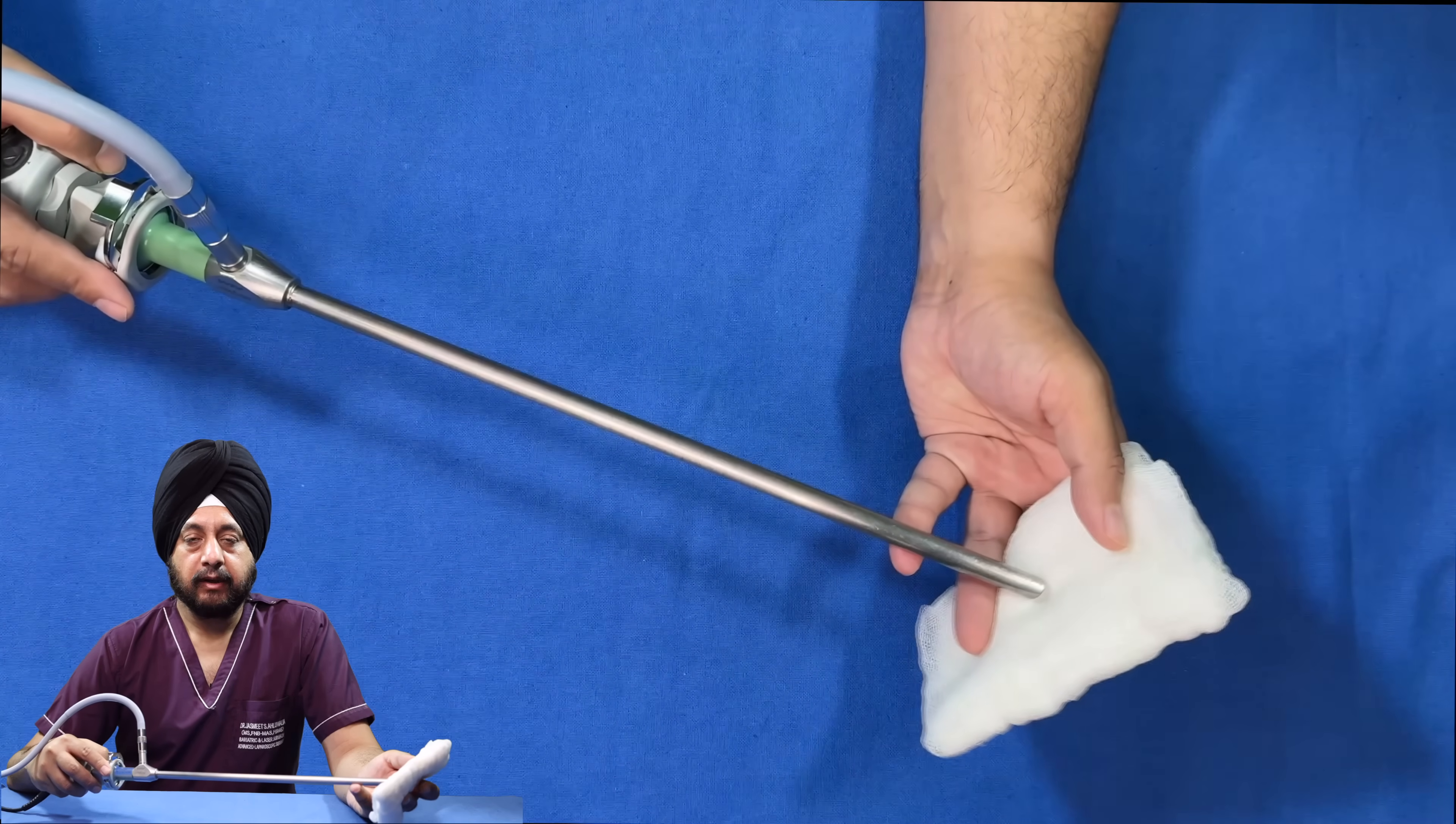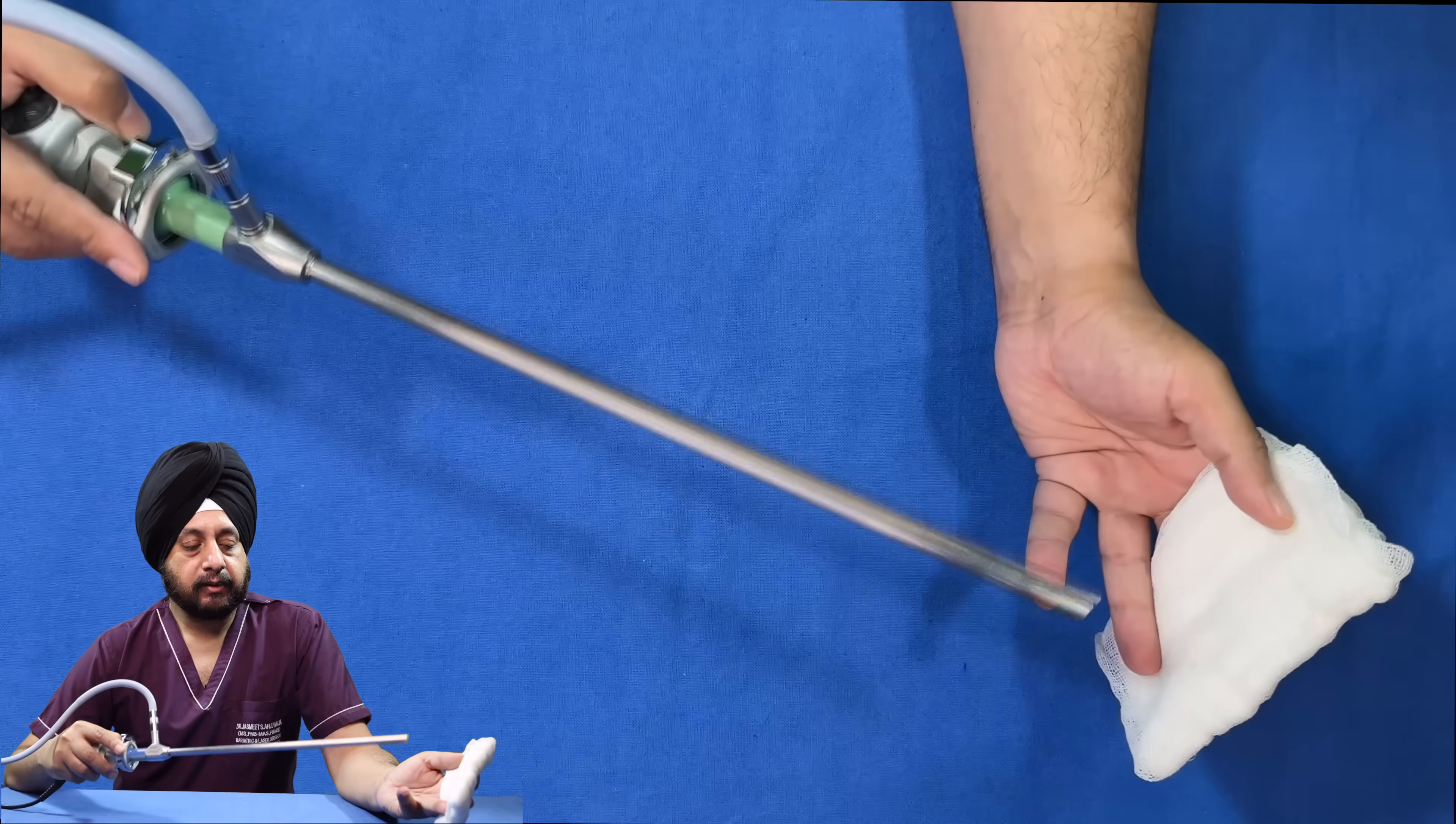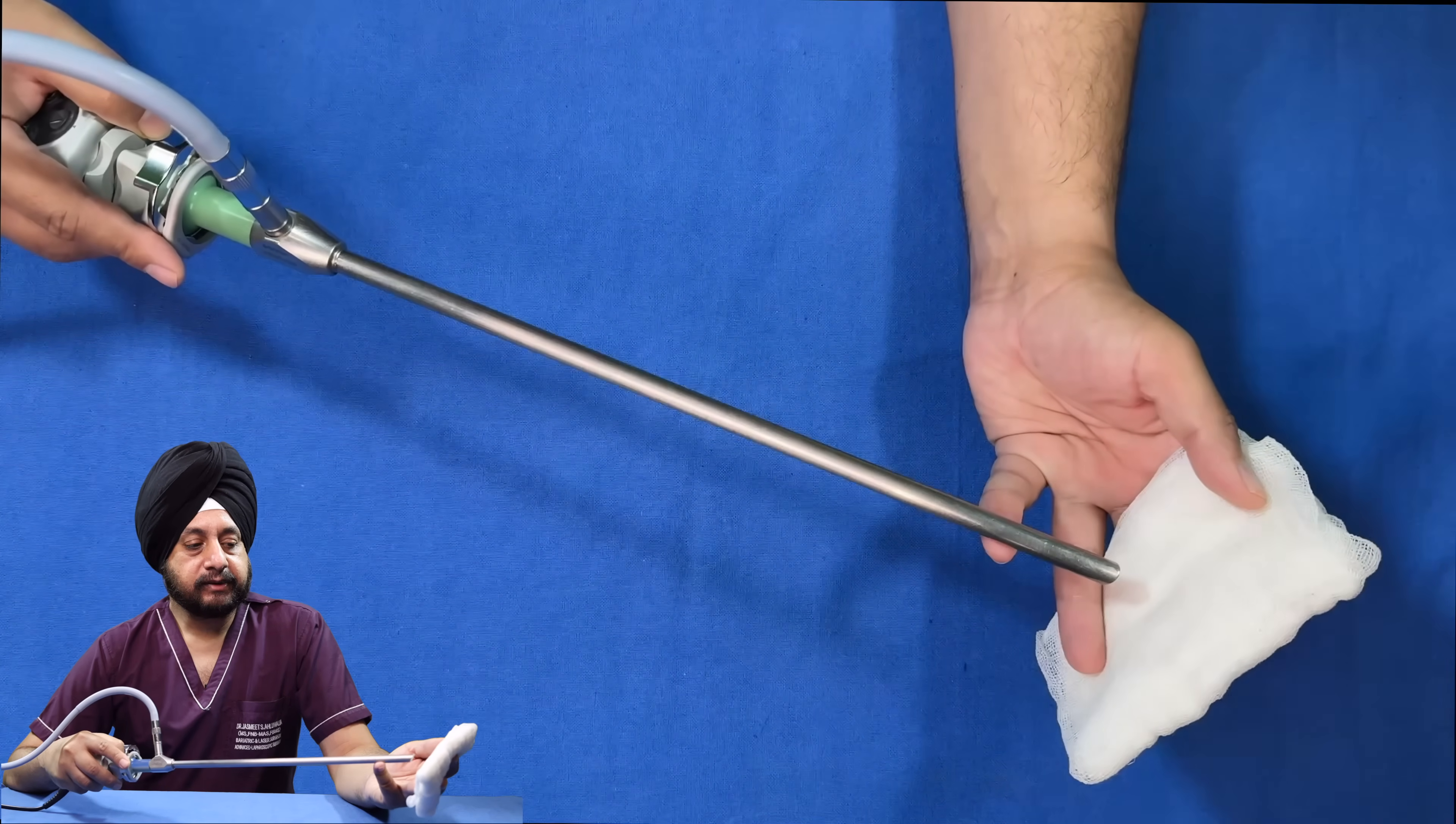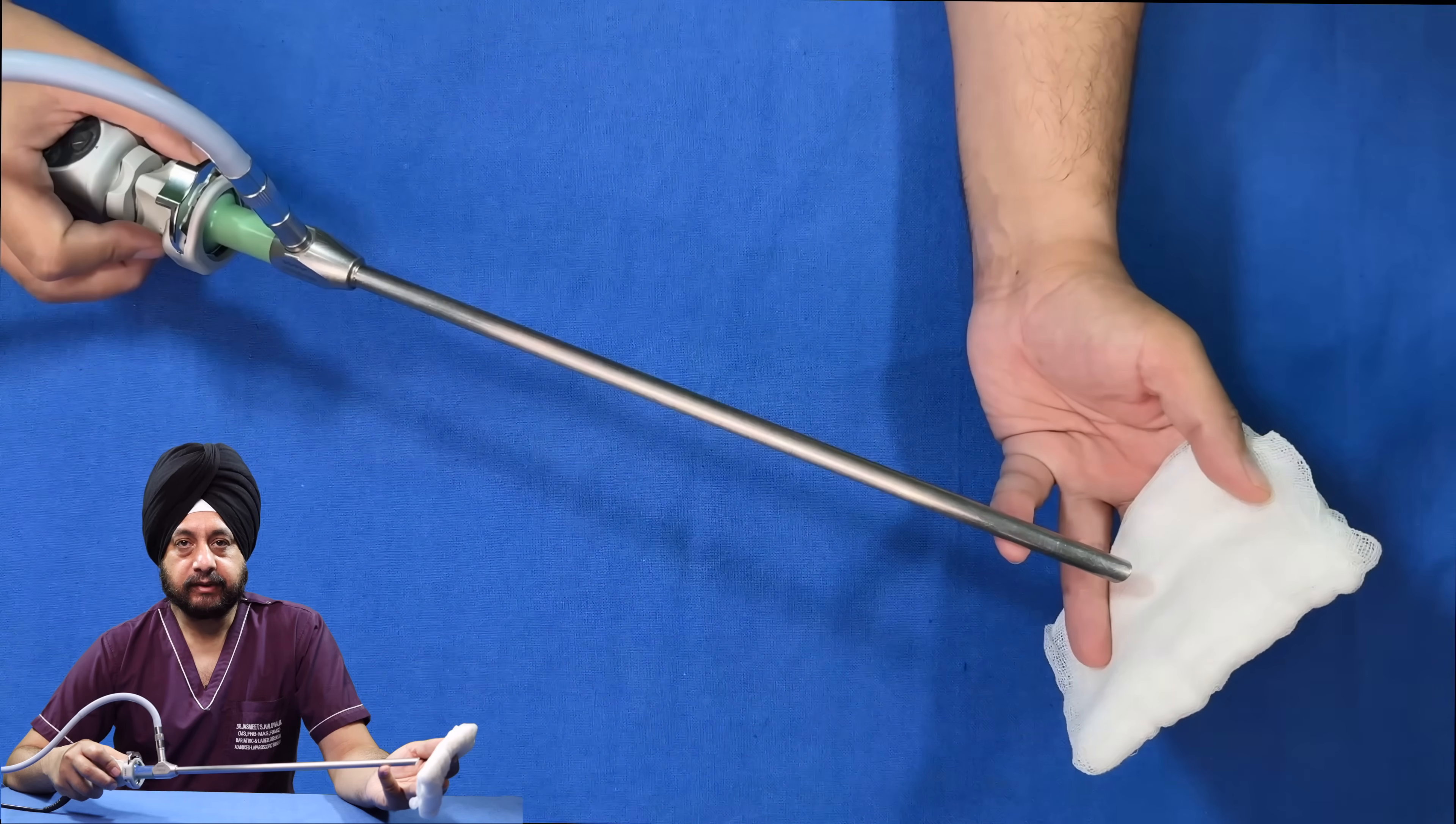When doing white balancing, ensure that the white cloth like this gauze or pad is covering the entire screen of your monitor. Keep your scope at a certain distance and support it with your finger so it doesn't move. Keep it at a distance so that the gauze is properly focused by rotating the focusing system and the entire screen is covered by white gauze.